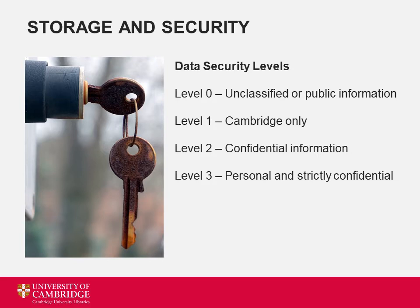Where will you store your data? Your answer may depend on the security level of your data. You can see the main security levels used by the university on this slide. Level 0: unclassified or public information — anything already in the public domain. Level 1: Cambridge only — information available only to students and staff, such as meeting minutes and site-licence software. Level 2: confidential information — general personal information or anything designated as confidential. Level 3: personal and strictly confidential — highly sensitive information or personal details. Never share these on a cloud storage server. Most university services can deal with data up to level 2. If you're unsure what level your data falls under, speak to your supervisor or research colleagues.